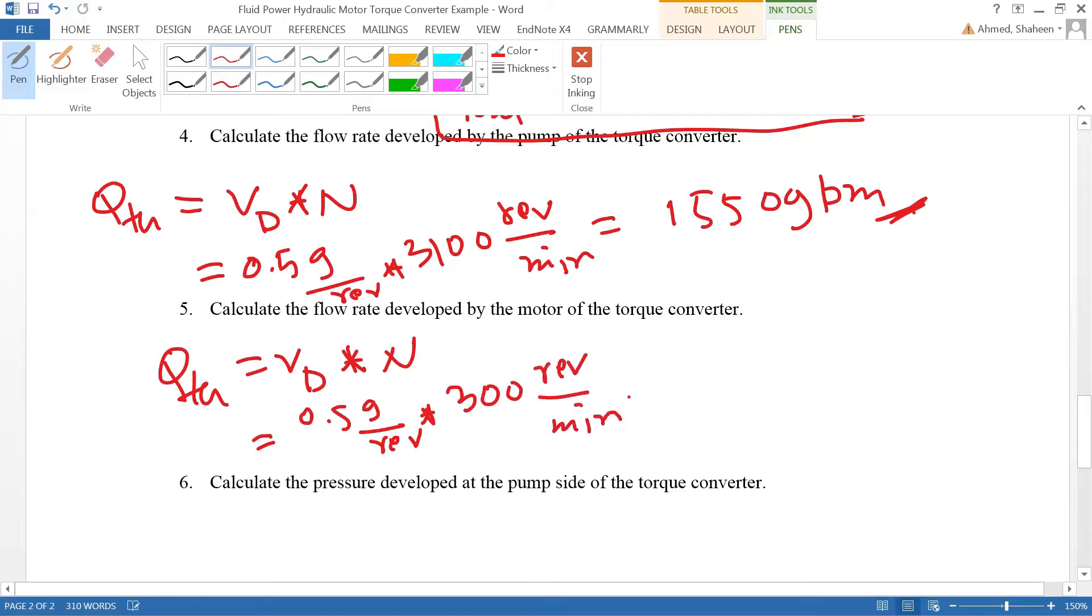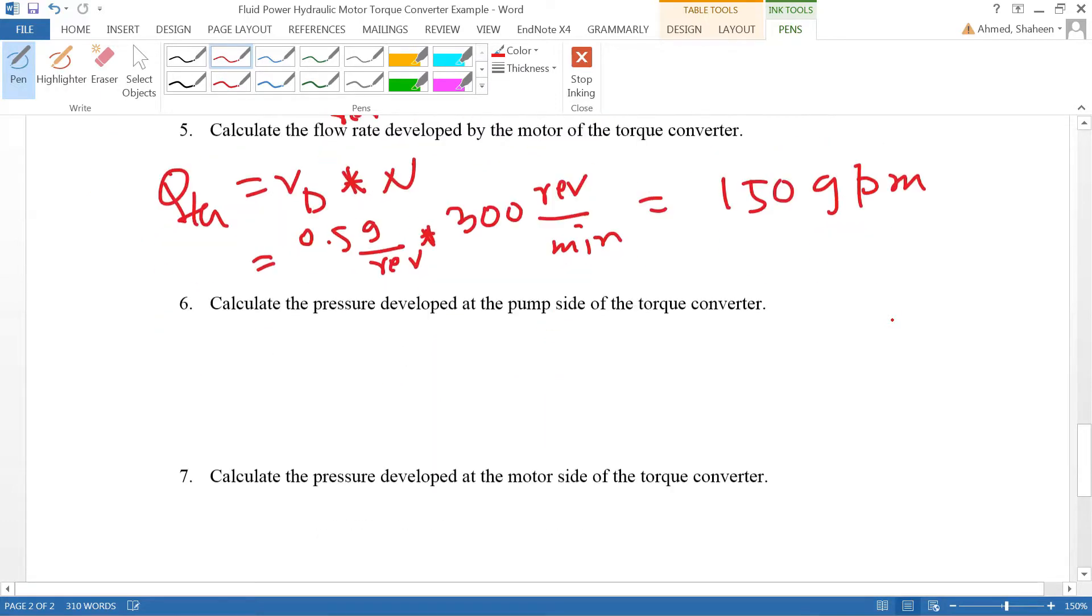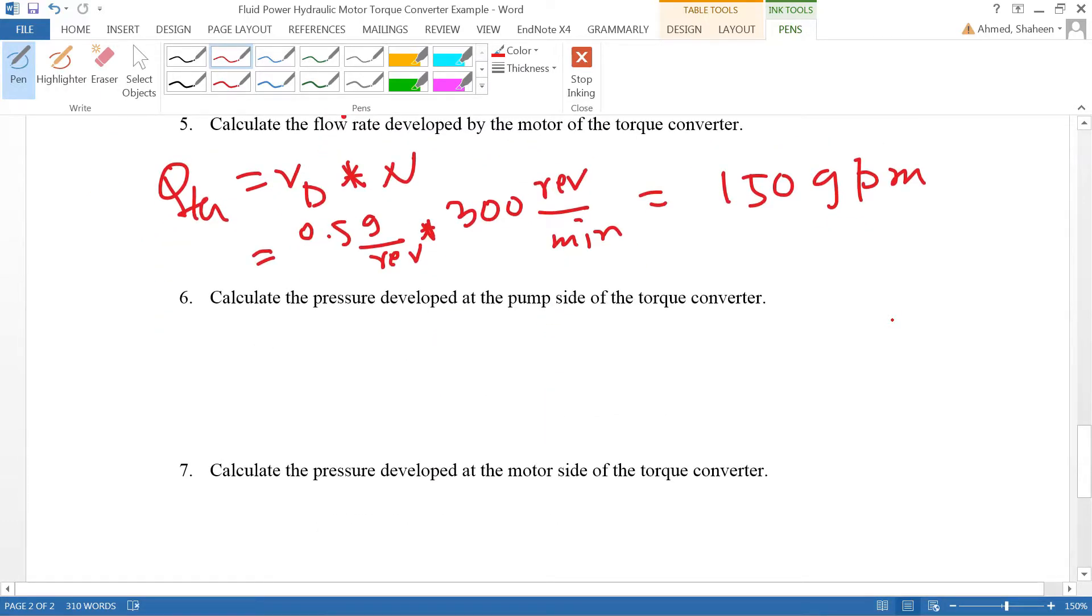I calculated that, that's 150. You don't need a calculator for that, 300 divided by 2 so 150 gallon per minute. Then calculate the pressure developed by the pump side of the torque converter.